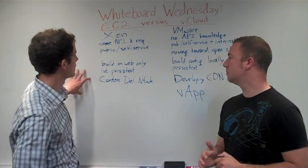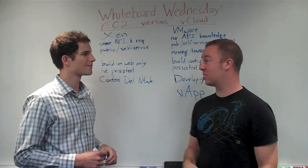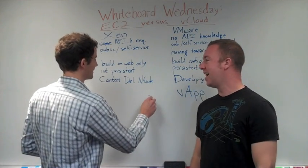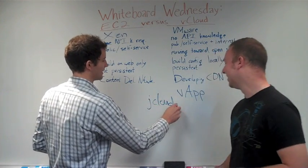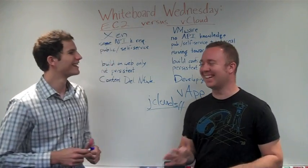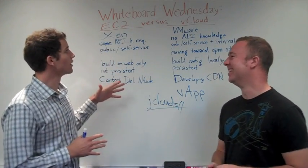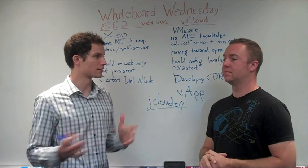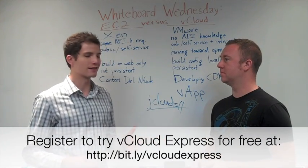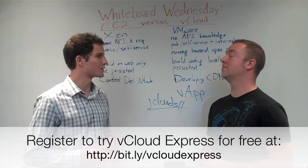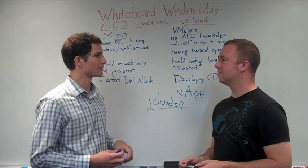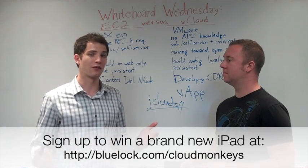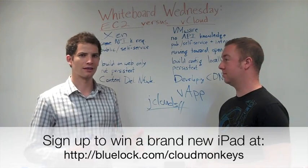We touched on some pretty key differences. We're also excited about jClouds, which actually works in both clouds — both EC2 and vCloud. Maybe everybody should just switch to jClouds and then you don't have to worry about it — you're super agnostic there. This has been a great overview. We also started a contest today with BlueLock vCloud Express called the Cloud Monkey Contest. You can go to our website, sign up, and develop the coolest, most innovative app — it's going to win a free iPad, and the first ten to sign up get some free gear.